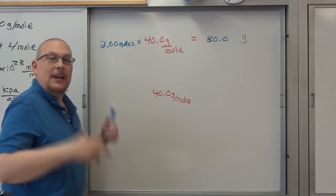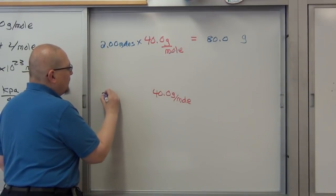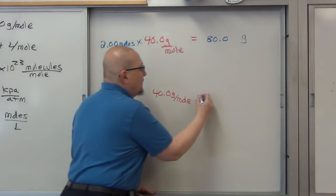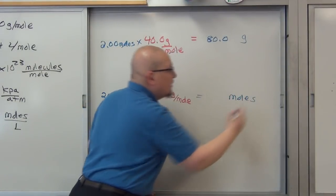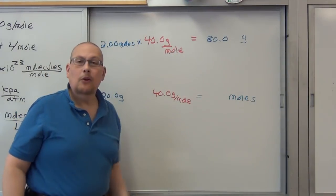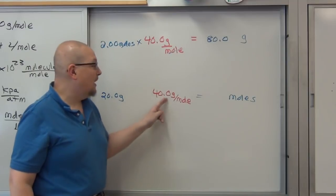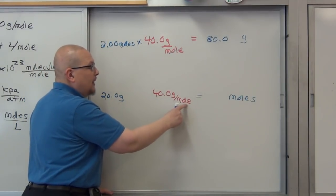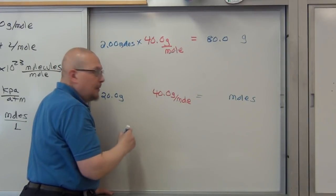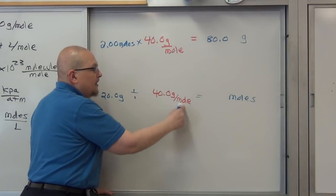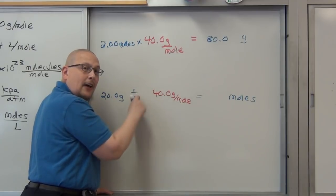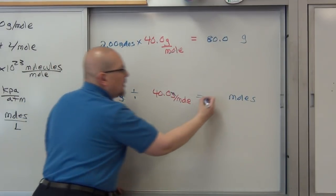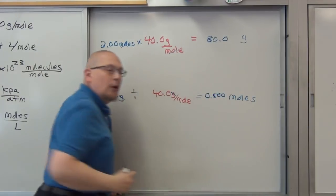Now suppose we have 20.0 grams of sodium hydroxide and we want to find out how many moles that is. We want to go from grams to moles. We're trying to solve for the denominator, so we divide. Grams will cancel and leave you with 0.500 moles. You don't even have to memorize any equations.